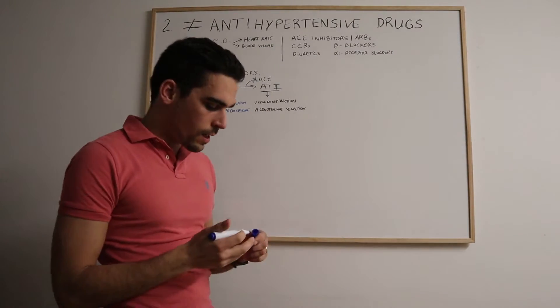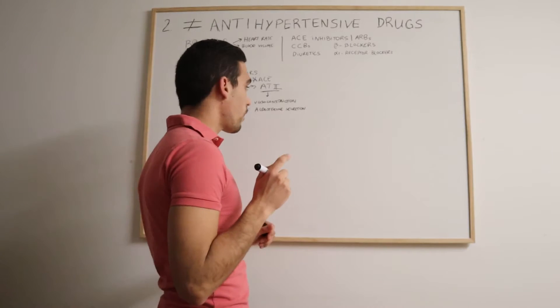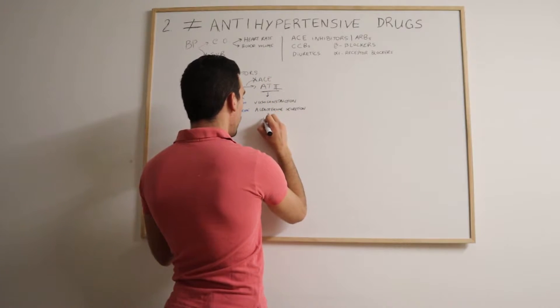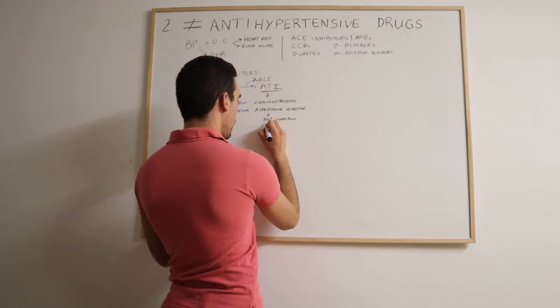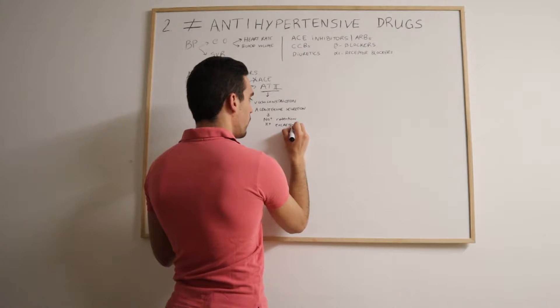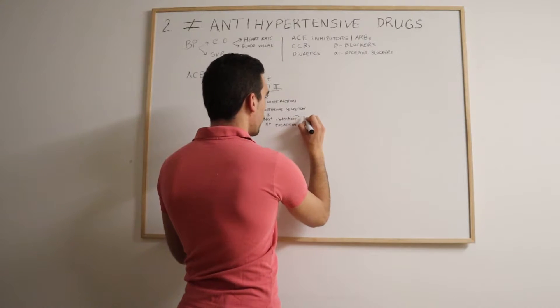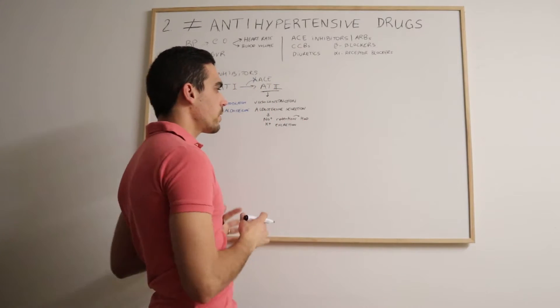Let's see as well. Aldosterone is responsible on the kidneys for two main things. It's responsible for sodium retention and it is responsible as well for potassium excretion. When we say sodium retention we also are talking about water retention because normally the water follows the salts, the sodium.